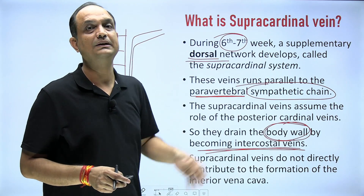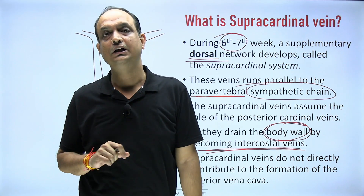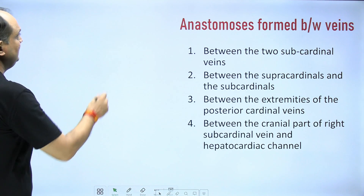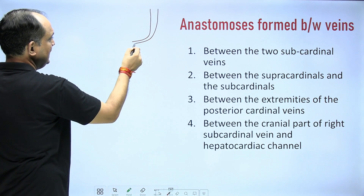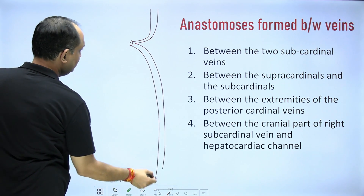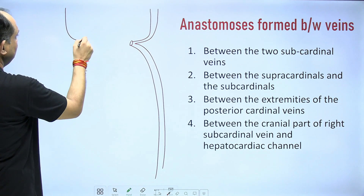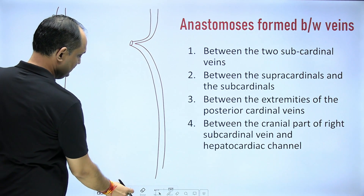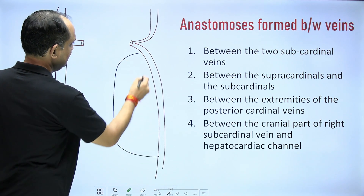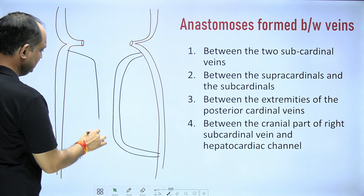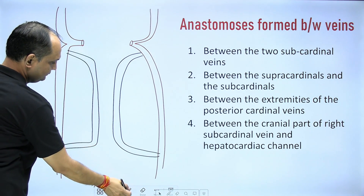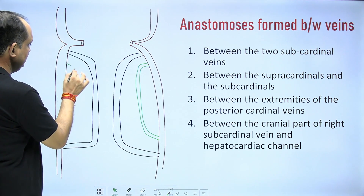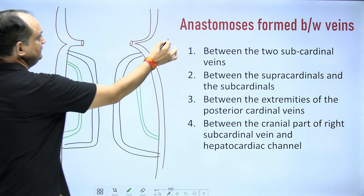There are some anastomoses that develop between the sub and supra cardinal veins, which is why basic knowledge of supra cardinal veins and their contribution to inferior vena cava is needed. Four anastomosing channels appear. On each side there is an anterior and posterior cardinal vein. Additionally, sub cardinal veins appear on both sides, and supra cardinal veins appear on both sides.